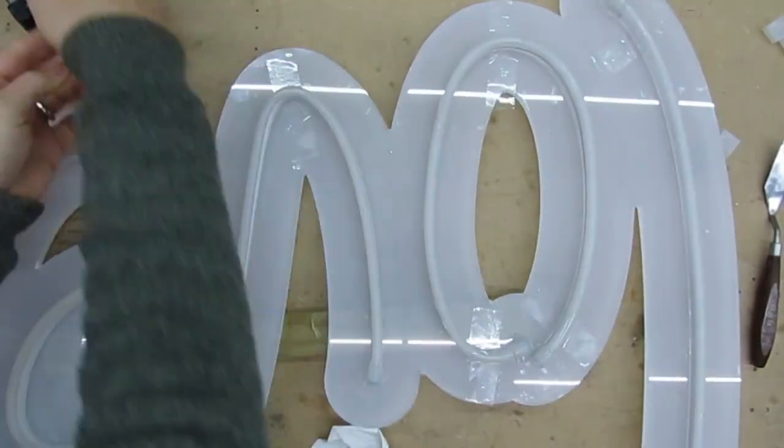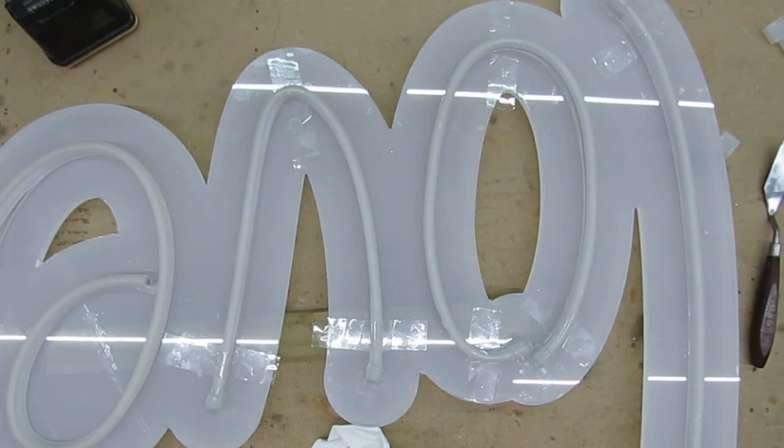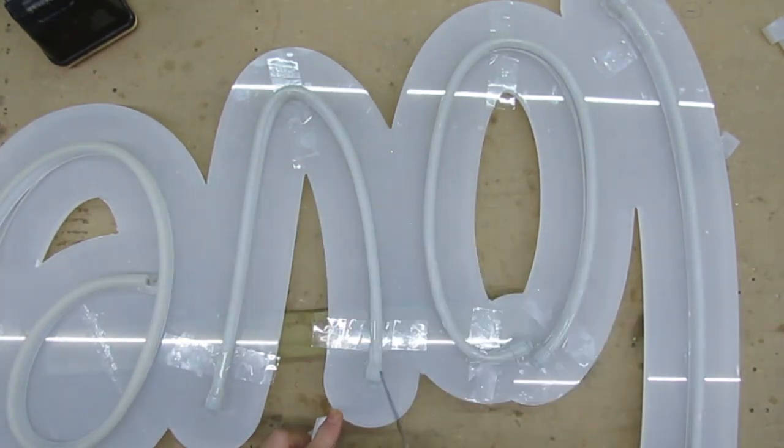Notice that I'm using some sticky tape to hold the neon in place until it's set. I do this at the bends of the letters where the neon is more likely to splay outwards.